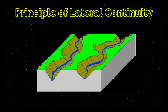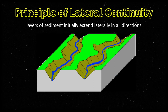Next, we have the principle of lateral continuity. This principle states that rock layers extend laterally as long as there is sufficient supply of sediments. In simple words, layers of sediment initially extend laterally in all directions. As a result, rocks that are otherwise similar but are now separated by a valley or other erosional feature can be assumed to be originally continuous.